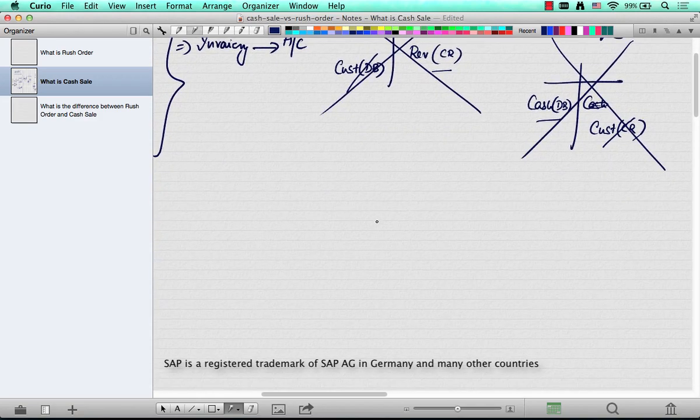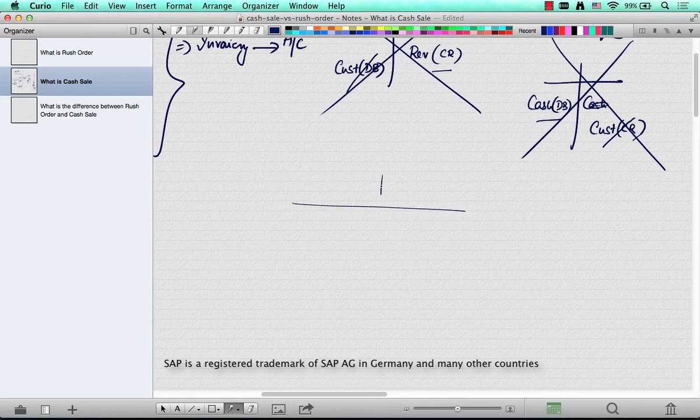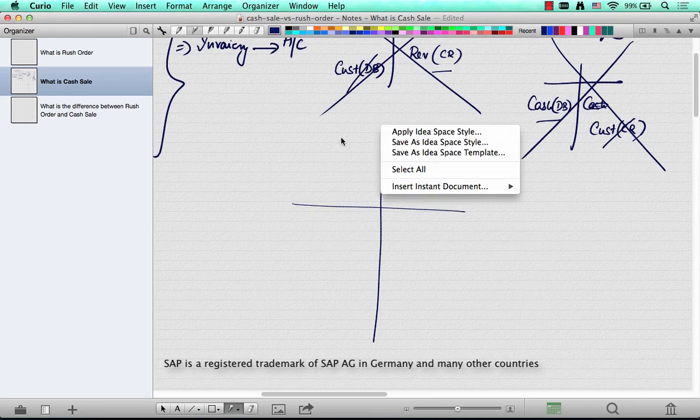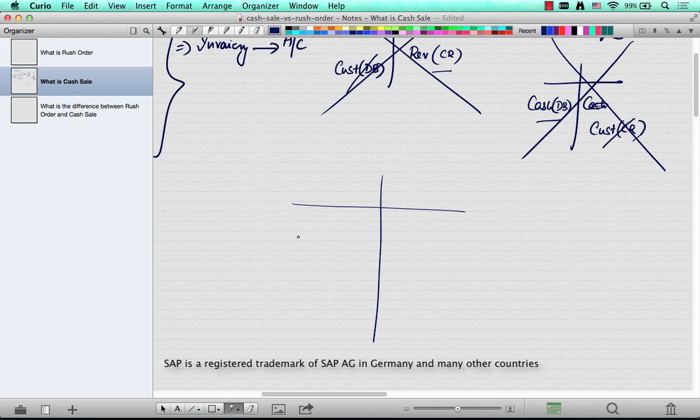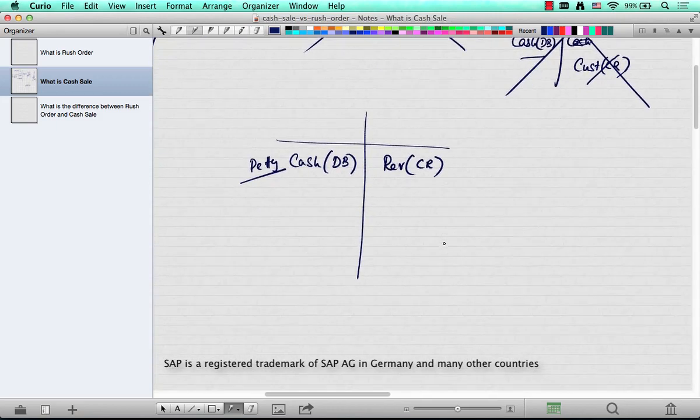The customer is ready with the cash right away. So as soon as the invoice is posted to accounts, there is no customer receivable. So instead, the cash of whatever $100 or $100,000 that's debited, call it petty cash or whatever. Typically, it's petty cash and the revenue account is credited. So this is a one-step process as opposed to a two-step process. So how is this done in SAP?